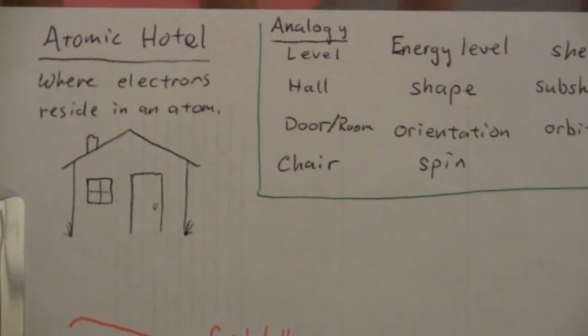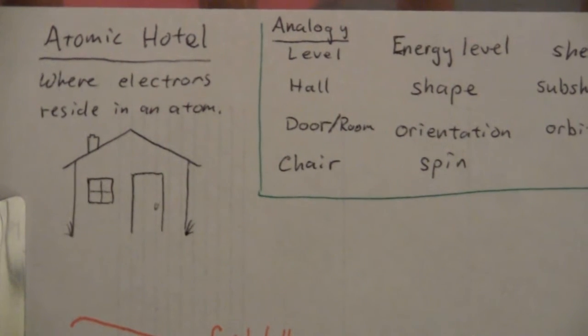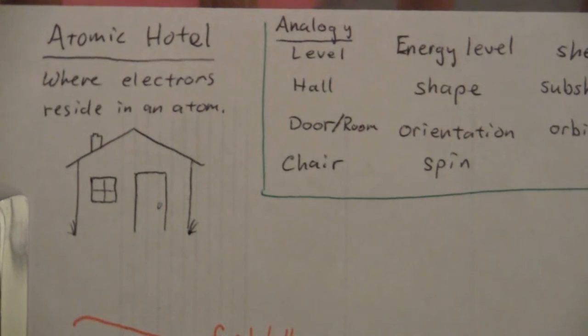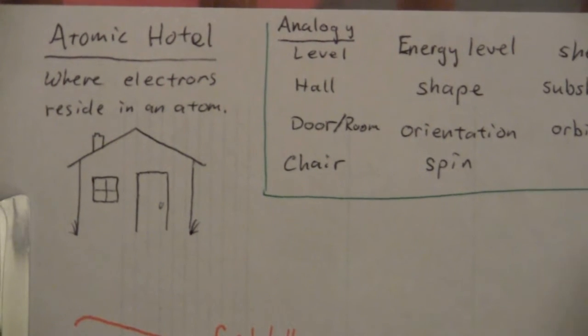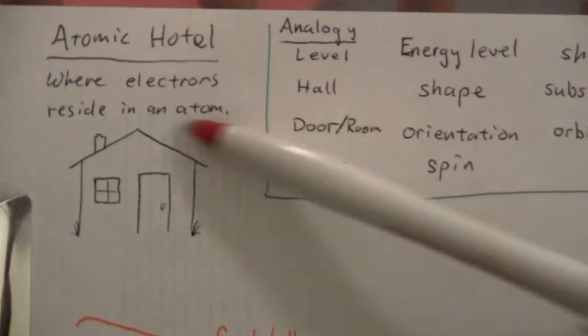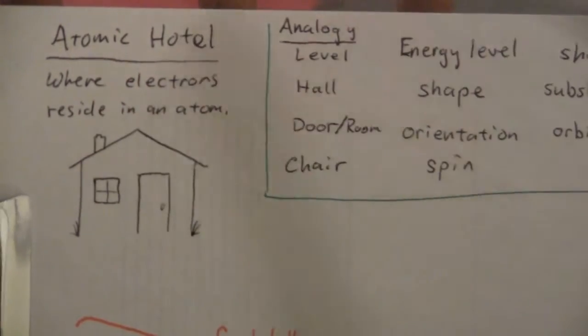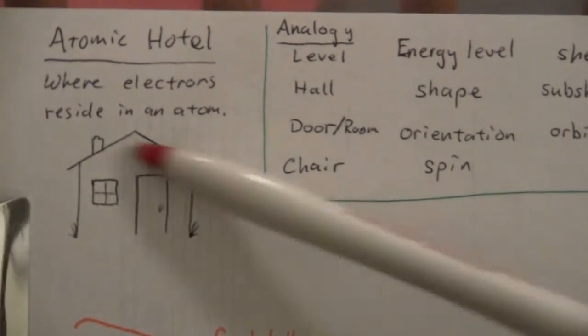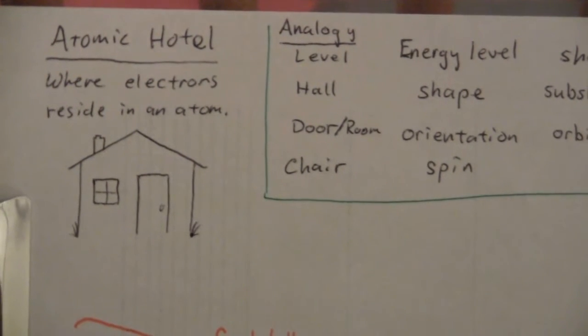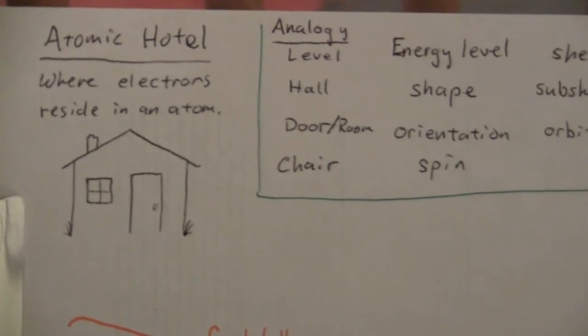To understand how the atoms are arranged within an atom, I thought it would be good to introduce a little analogy. I call it the atomic hotel. It's essentially where electrons reside within an atom. So you can think of it kind of like a building or a home for the electrons within the atom.